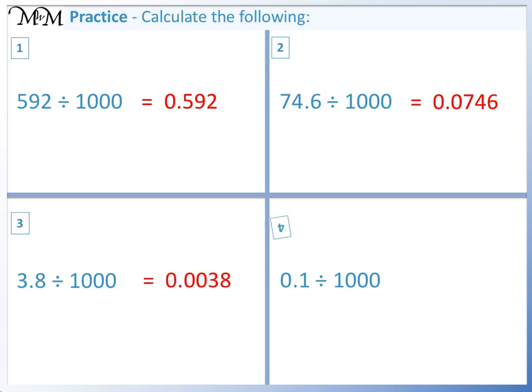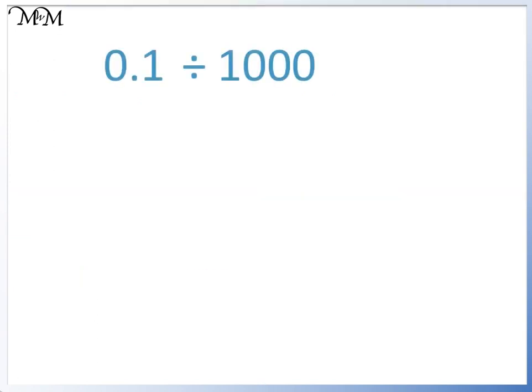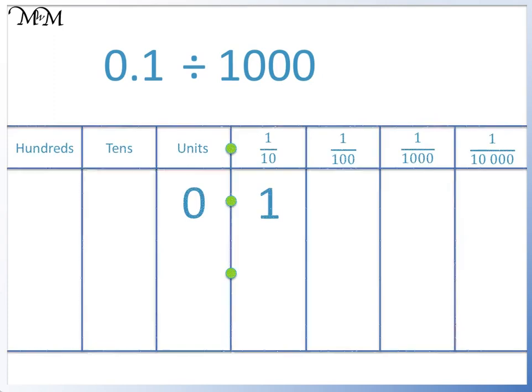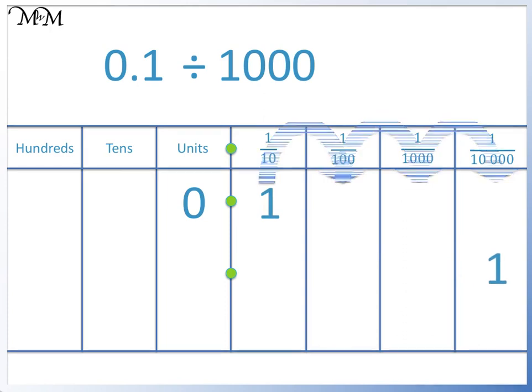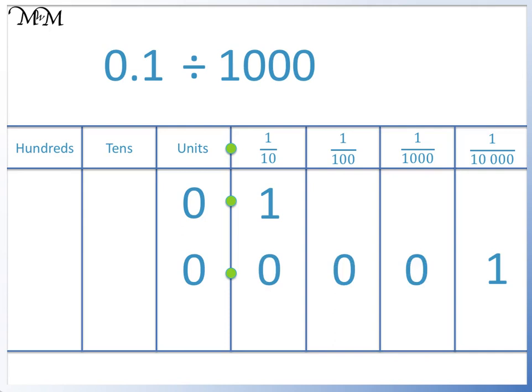Question 4: 0.1 divided by 1000. We move the 1 three places to the right: 1, 2, 3. We write a zero in the units column and three zeros in the spaces between the decimal point and the 1. 0.1 divided by 1000 equals 0.0001.